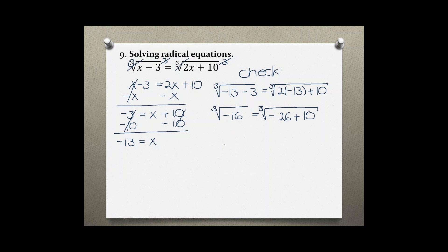And then on the left I can take the cube root of negative 16 because negative 16 is not a perfect cube, so I'm just going to leave it like that. And then on the right side I have negative 26 plus 10 which gives me negative 16.